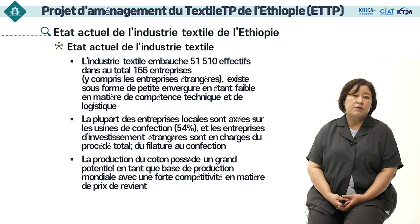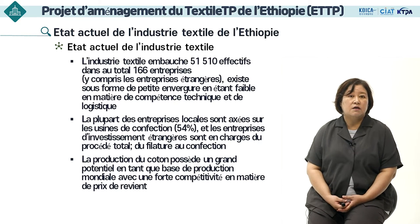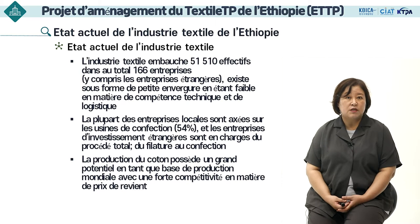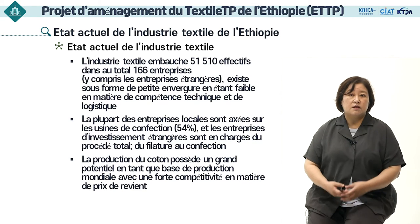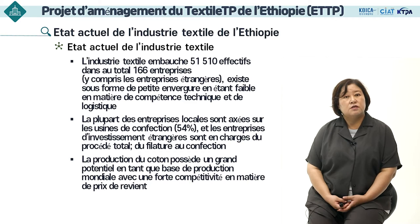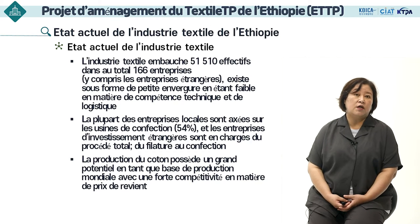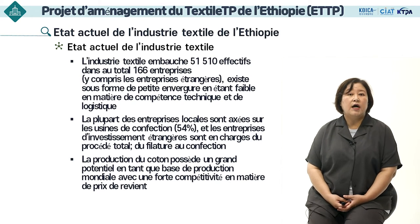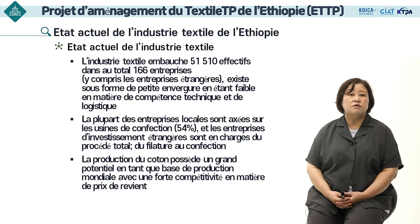En ce qui concerne l'état actuel de l'industrie textile de l'Éthiopie, le nombre total d'entreprises était de 166, ce qui a légèrement augmenté ces dernières années. Le nombre d'employés, y compris les sociétés étrangères, est d'environ 51 000. Ces entreprises sont de petites envergures, faibles en matière de technologie et d'environnement logistique. La plupart des entreprises locales font partie du secteur de la couture, tandis que les entreprises à capitaux étrangers gèrent l'ensemble du processus, de la filature à la couture. Le pays a un potentiel élevé en tant que base de production textile mondiale.